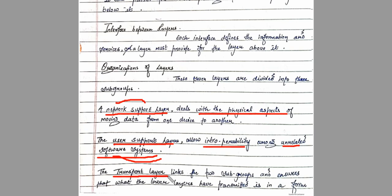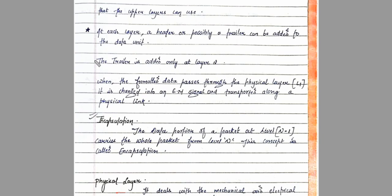The transport layer links these two groups and ensures that what the lower layers have transmitted is in a form that the upper layers can receive. Regarding the trailer: it is only added at layer two, the data link layer. Whenever a package is received from above, the data link layer adds the trailer.